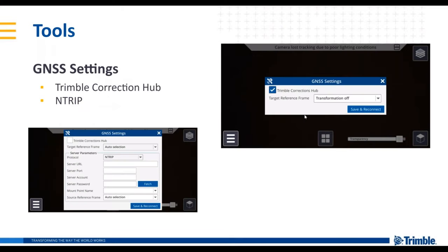In GNSS settings, SiteVision comes with Trimble VRS Now and RTX Centerpoint automatically with your subscription. If you're inside the VRS Now network, leave the Trimble Corrections Hub checked and it will call the correction service and begin initialization. If you're outside the VRS Now network, it automatically switches to RTX Centerpoint. If you prefer a custom NTRIP setup, uncheck the Trimble Correction Hub and enter your URL or IP address, port, and account information.